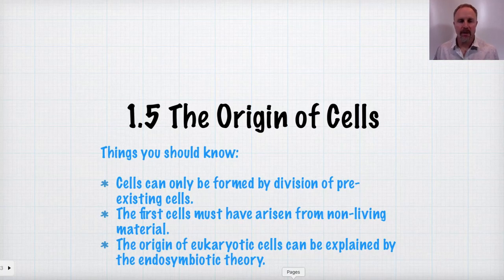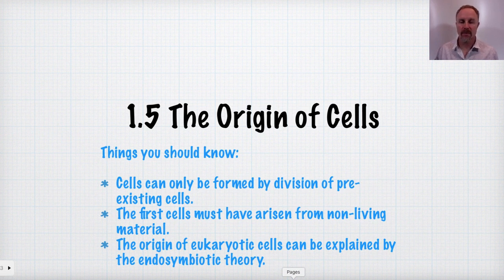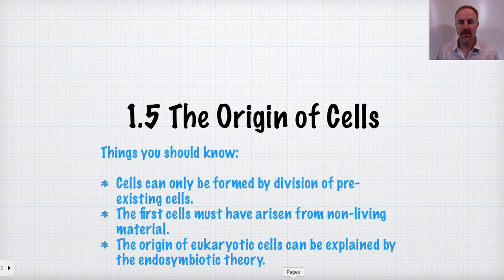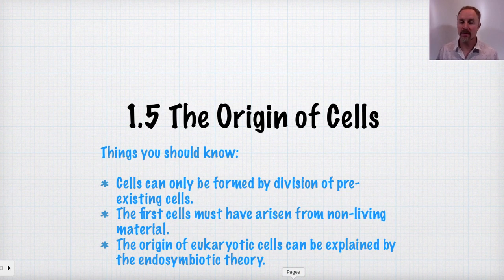Today we're going to be talking about section 1.5, the origin of cells. Some of the things you need to know are that cells can be formed by the division of pre-existing cells, like we saw with the cell theory. The first cells must have arisen from non-living material, and the origin of eukaryotic cells can be explained by the endosymbiotic theory.